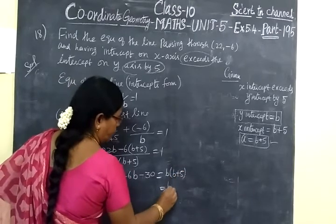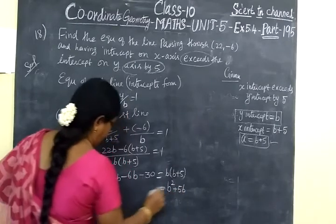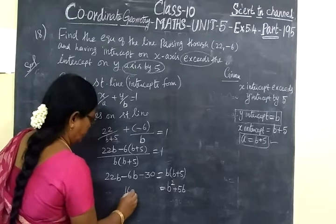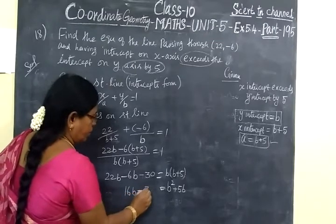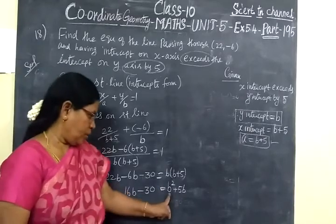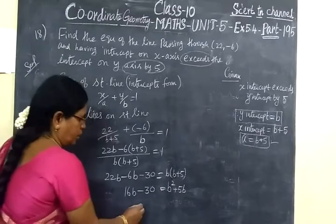So we have B squared plus 5B on the right side. On the left, 22B minus 6B is 16B minus 30. Moving everything to one side, we get B squared plus 5B minus 16B minus 30 equals 0.